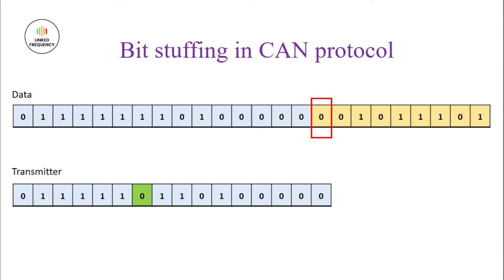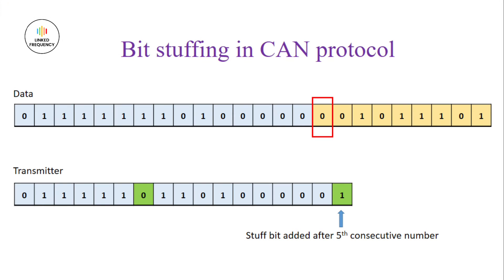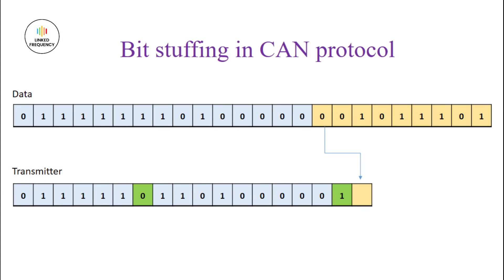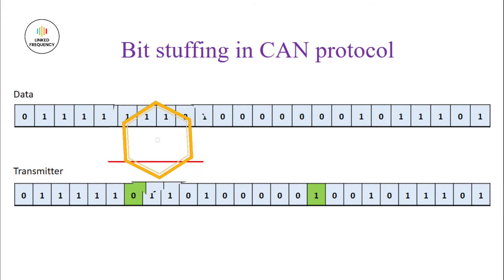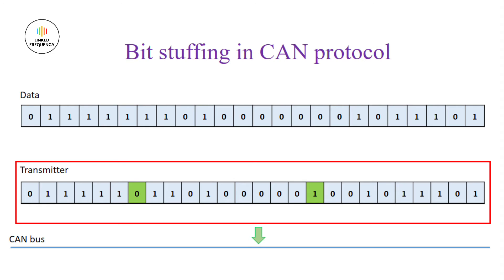Now you can observe there are more than five consecutive 0s. Hence, after the fifth consecutive 0, an additional stuff bit is added which is of opposite polarity — in this case it would be value 1. After the addition of the stuff bit, the further data is taken as usual until the same pattern is encountered again. After completing the addition of all stuff bits to the transmitter data, the data is now ready to be sent over the CAN bus.